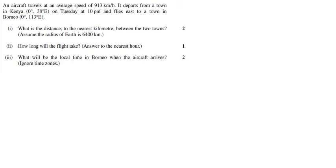An aircraft travels at an average speed of 913 kilometers per hour. It departs from a town in Kenya at 0 degrees, 38 degrees east on Tuesday at 10pm and flies east to a town in Borneo, 131 degrees east. If we're looking at our timeline, we've got Kenya at 38 degrees east and Borneo at 131 degrees east. Obviously Borneo is east of Kenya because it's further away.